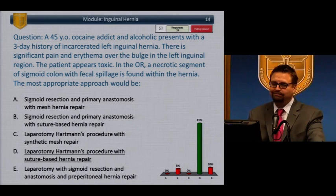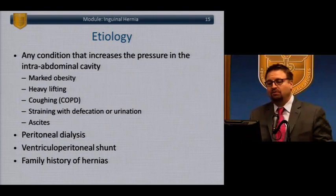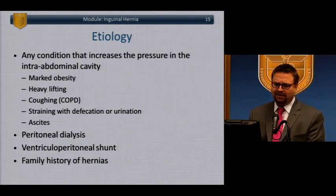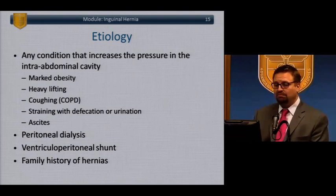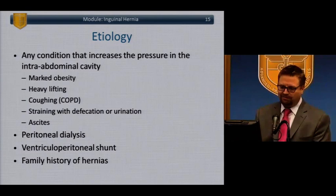What are the risk factors for hernias? Anything that increases intra-abdominal pressure: obesity, heavy lifting including weightlifters and extreme athletes, chronic coughing usually related to COPD, chronic constipation or prostate issues causing straining, patients with ascites, patients on peritoneal dialysis — similar to having ascites — same with a VP shunt. And, like everything, family history is also a risk factor.